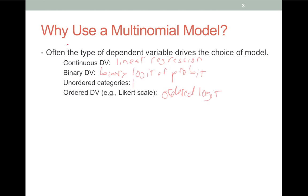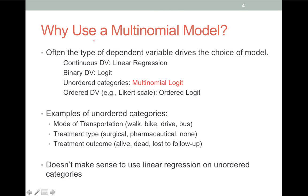In a few weeks, we'll talk about the ordered logit model to handle that sort of case. But today we focus on the multinomial case — outcomes that don't have an obvious ordering. For example, modeling choice of transportation: how do people get to work? Maybe they walk, bike, drive, or take the bus. There's no natural ordering there. You just want to know how different characteristics of people determine the choice they make.